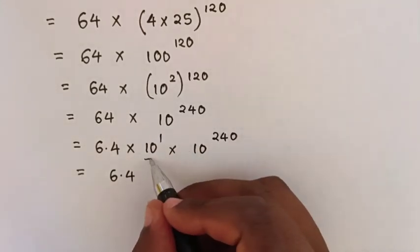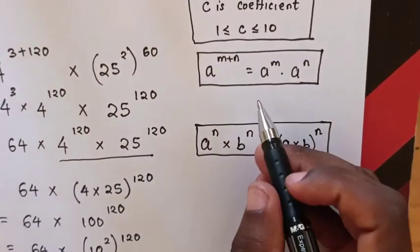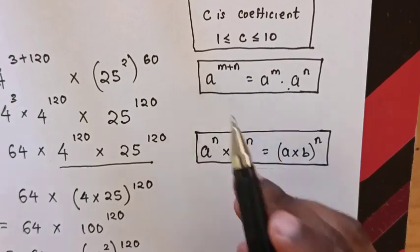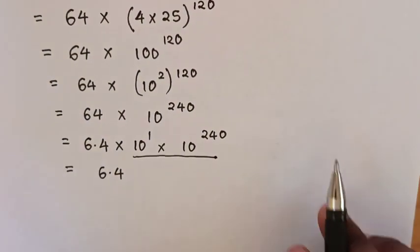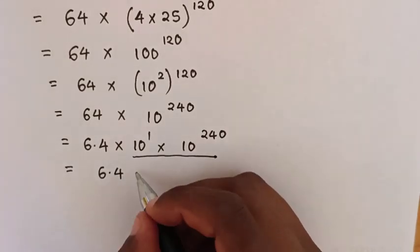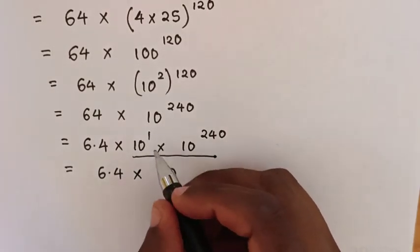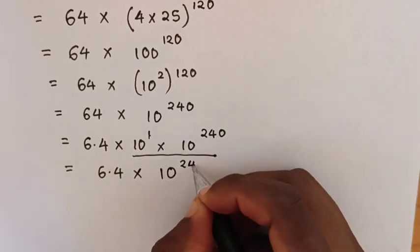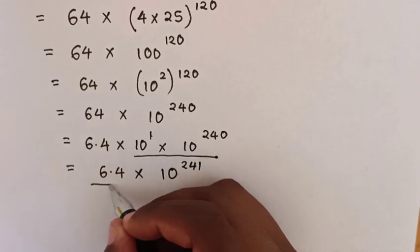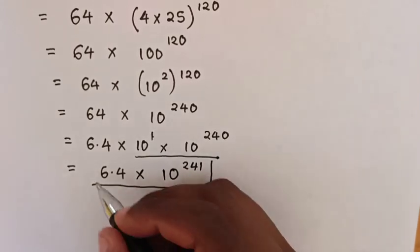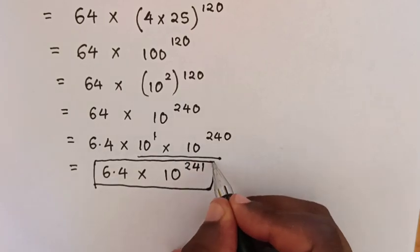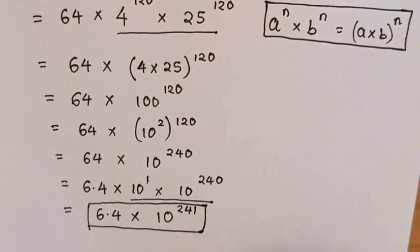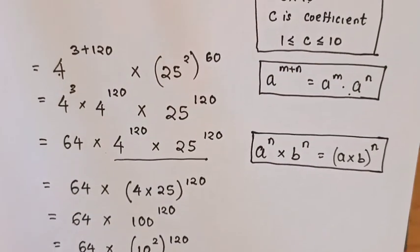In here, we will apply the exponential rule. So, it will be 6.4 times 10 power of 1 plus 240, which is power of 241. Therefore, this is our final answer in scientific notation. Don't forget these steps — subscribe to my channel and see you in the next video.